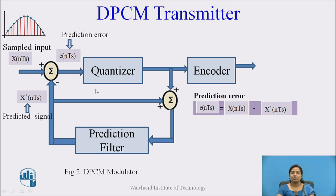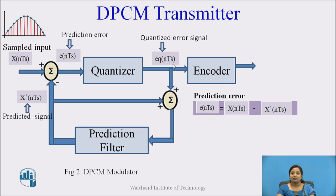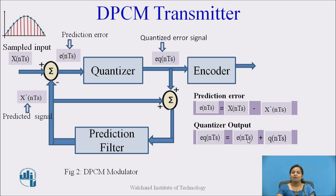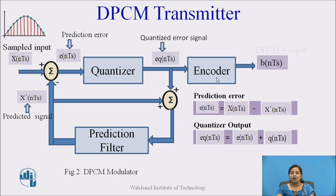The prediction error is given as input to the quantizer. At the output of the quantizer, we get a quantized error signal EQ(NTs), which is defined as the combination of error signal E(NTs) and quantization error Q(NTs). This error signal is then given to the encoder, which encodes the quantized signal, and at the output of the encoder we get the DPCM signal, which is binary data.